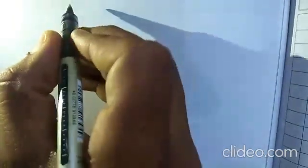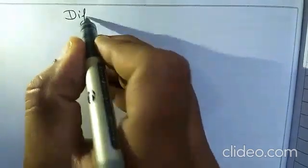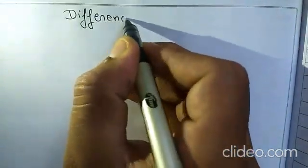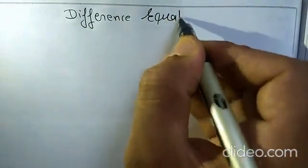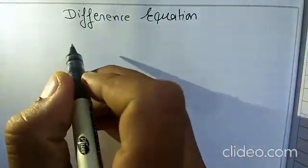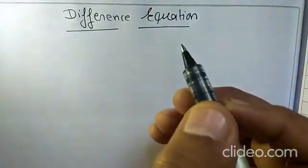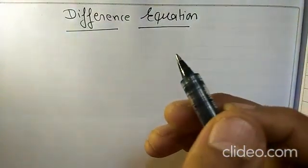Hi all. The title is Difference Equation. Here we see what is the Difference Equation and a few examples. A difference equation is an equation which gives the relation between the terms of a sequence.